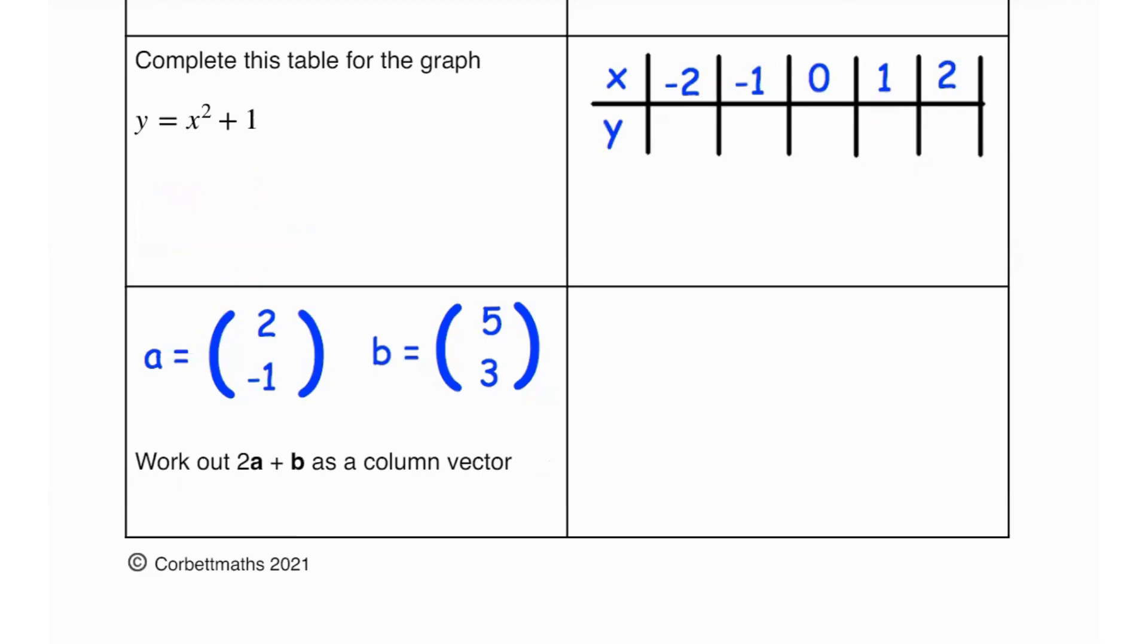Then it says work out 2a plus b as a column vector. So they've given us what a is and what b is. So 2a plus b is going to be 2 times (2, -1) plus (5, 3). That's going to be (4, -2) plus (5, 3). We do 4 plus 5 and negative 2 plus 3 and that equals to (9, 1). That is your answer.